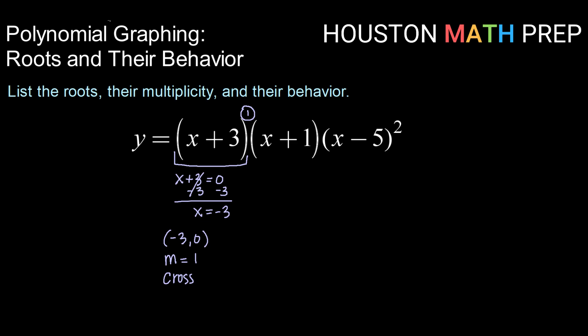Now we can do that for each one of our roots. Taking the next factor, setting that one equal to 0, so x plus 1 equals 0 gives us an x value of negative 1. So we have a root of, or an x-intercept of (-1, 0).